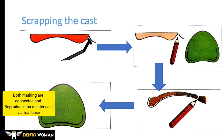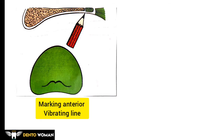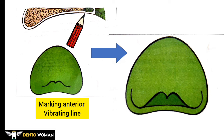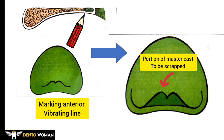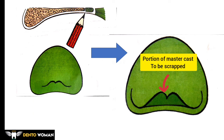So first we mark the posterior vibrating line and hamular notches in the patient's mouth and then transfer them to the master cast via the trial base. The anterior vibrating line is marked at the junction of the hard and soft palate using an indelible pencil, as seen clearly in the image. The markings of the anterior and posterior vibrating lines are transferred to the cast, and the cast is scraped to a depth of 1 to 1.5 mm in the area between the two vibrating lines. The darkly shaded area in the image shows the area to be scraped.